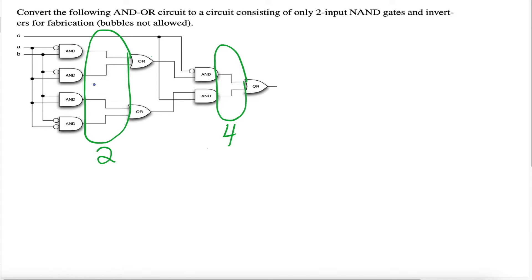When we try to convert an AND-OR circuit to a NAND circuit, the first thing we do is put bubbles at all the outputs and inputs of the gates. We have lines connecting inputs and outputs, so we put inverting bubbles over all of them — and we do the same for the fourth junction as well. Now we have inverting bubbles on every input and output. Because of our rule, these two OR gates can automatically become NAND gates since we added the inverting bubbles.